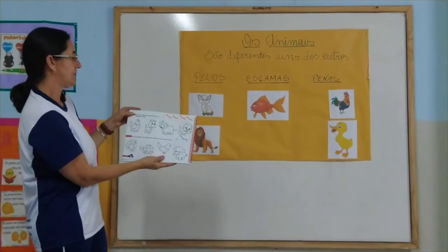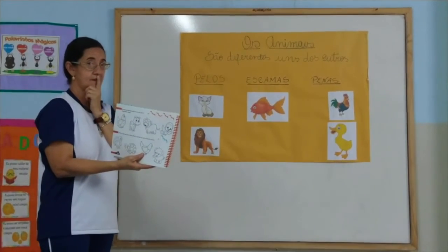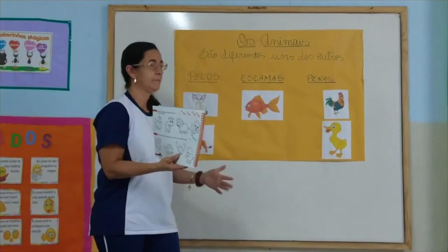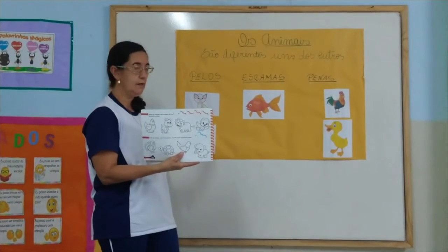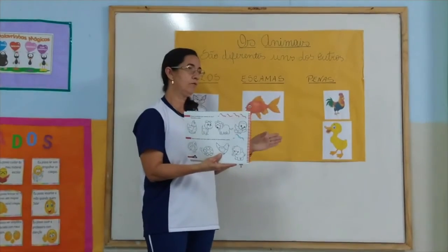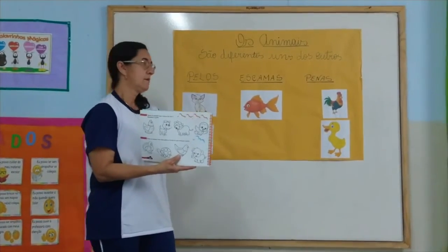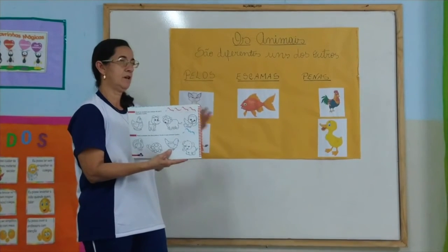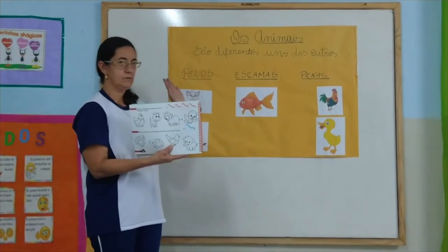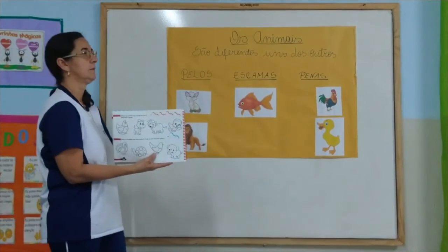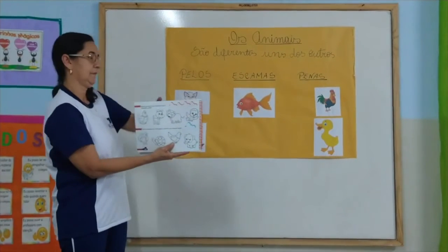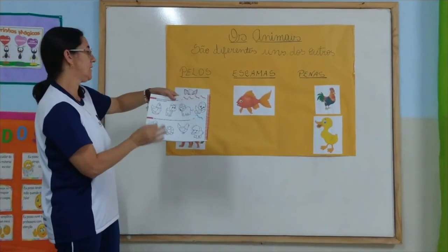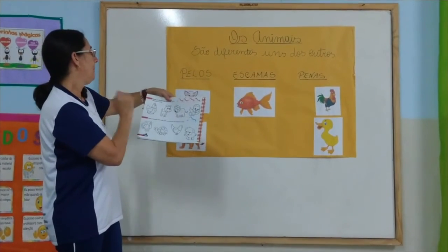Then go to page 96. Which animals are born from eggs? Look how interesting. You must know that the hen, the duck — they are animals that lay eggs. So if the hen lays an egg, a chick will be born. If the little duck lays an egg, a duckling will be born. And there's the peacock, the guinea fowl, the birds — types of birds like the parrot, if female. So you'll discover here, among these, which ones are born from eggs, and you'll paint them.